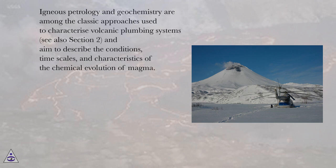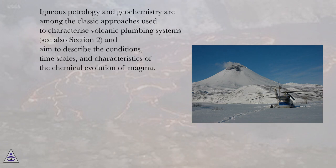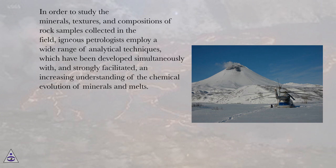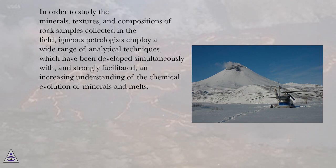Igneous petrology and geochemistry are among the classic approaches used to characterize volcanic plumbing systems, and aim to describe the conditions, timescales, and characteristics of the chemical evolution of magma. This characterization is generally based on the mineralogy and textures of igneous rocks, as well as their major and trace element composition. In order to study the minerals, textures, and compositions of rock samples collected in the field, igneous petrologists employ a wide range of analytical techniques, which have been developed simultaneously with, and strongly facilitated, an increasing understanding of the chemical evolution of minerals and melts.